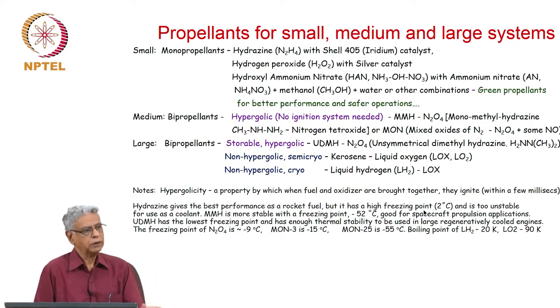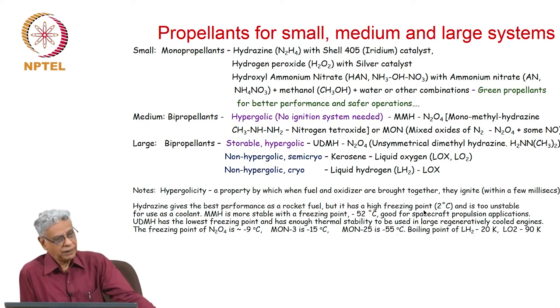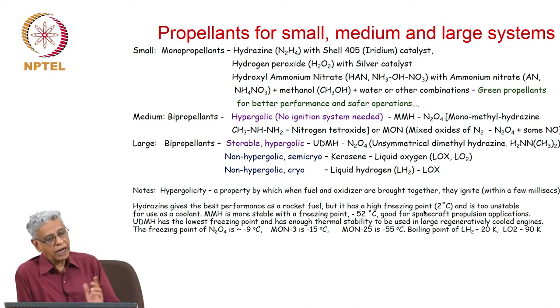Let us look at propellants for small, medium and large propulsion systems. For small systems, mainly satellite applications, the monopropellants used are hydrazine with a catalyst called Shell 405, an iridium based catalyst. There is no other catalyst which has performed as well. Hydrogen peroxide can be used with silver catalyst. Recent generation propellants include hydroxyl ammonium nitrate or HAN with ammonium nitrate, methanol and water, called green propellants, meant for better performance and safer operations.